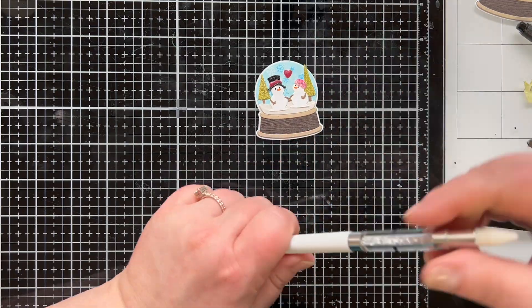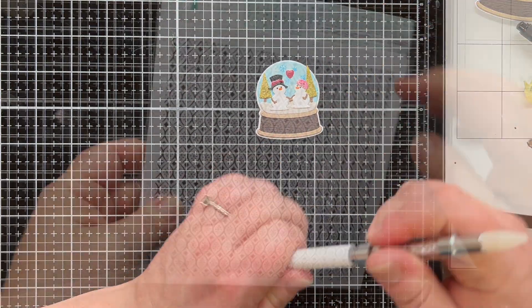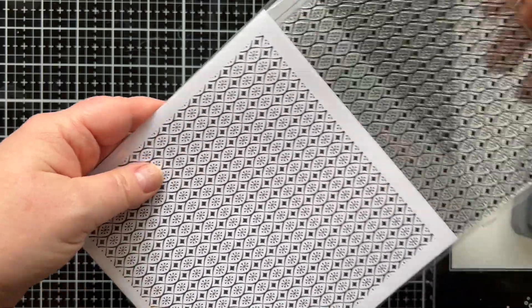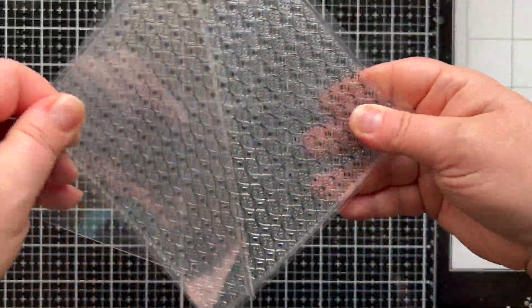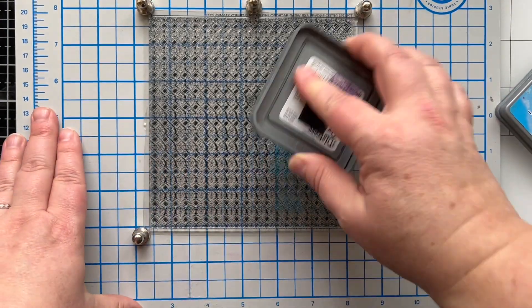I'm putting that on an ornament that I'm going to give my husband. Anyways, I thought you'd want to see that. Now I am taking the retro snowflake wrap six by six background stamp, inking that up with salty ocean to create a background for this card.